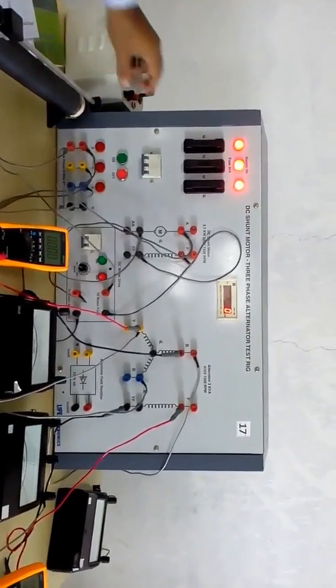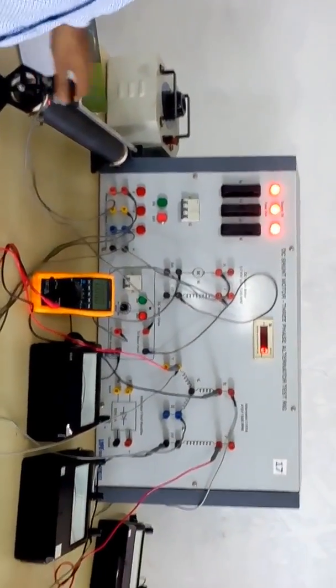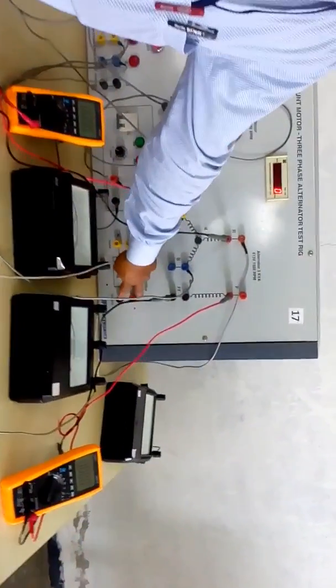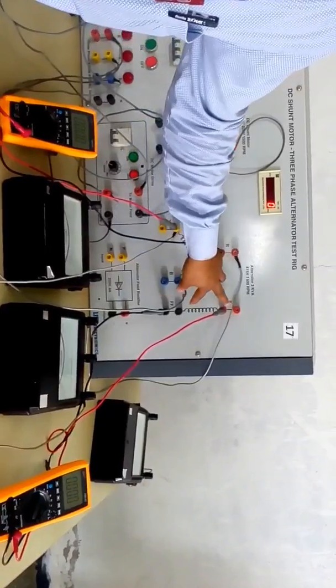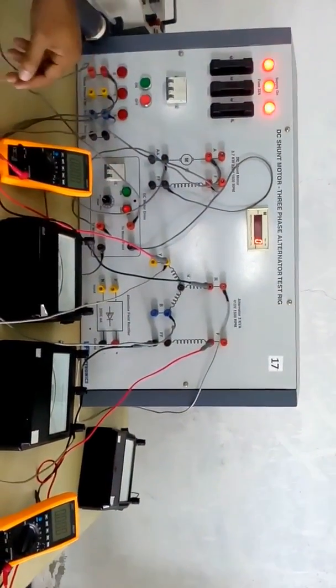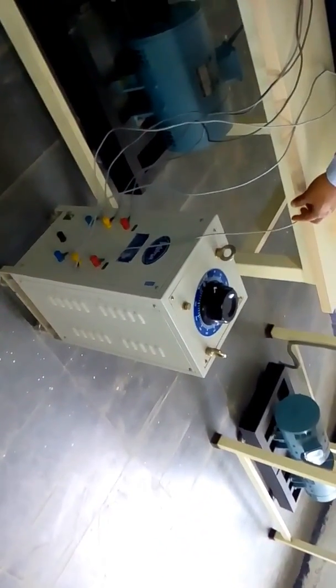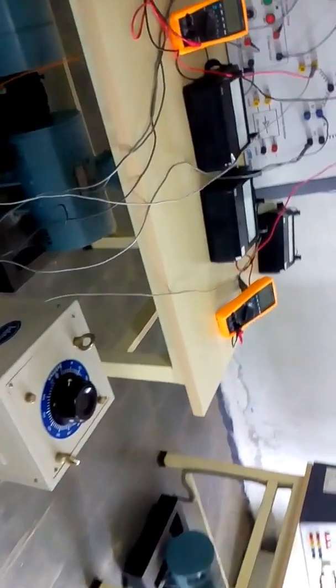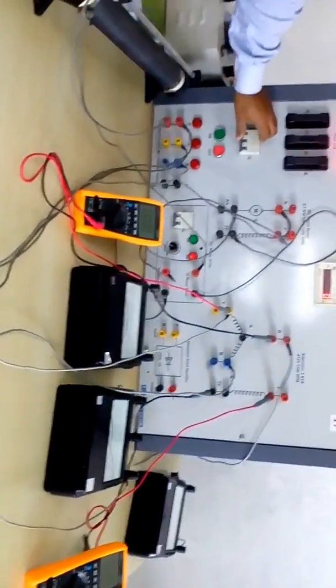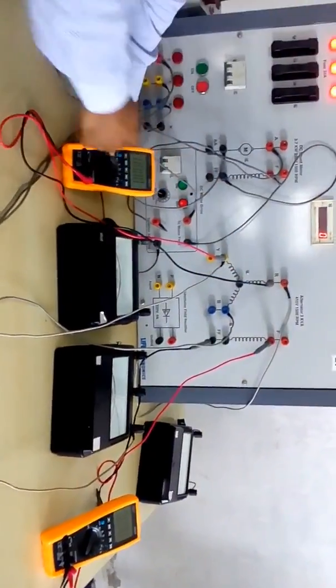the circuit diagram. This is the field rheostat of motor, and we have not given any supply to the field. Field is kept open for alternator, and for alternator we are given supply from auto transformer